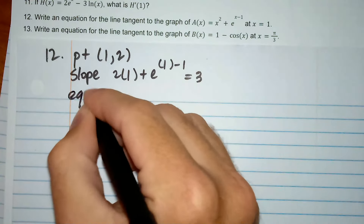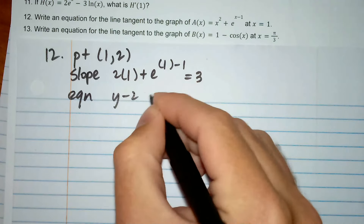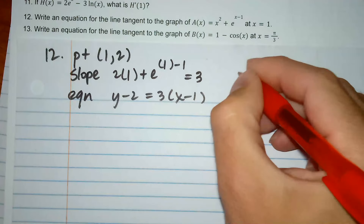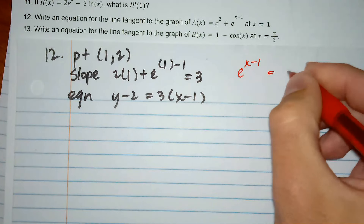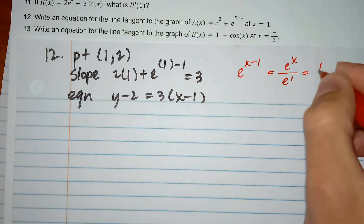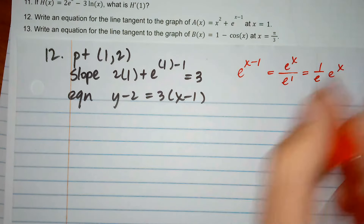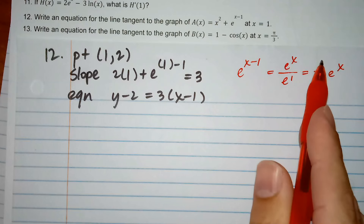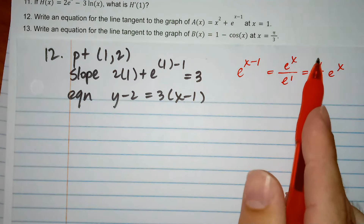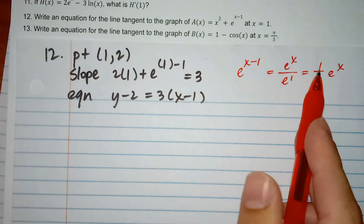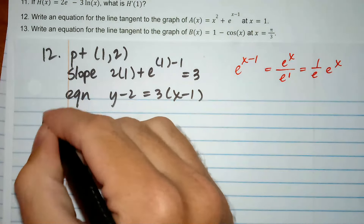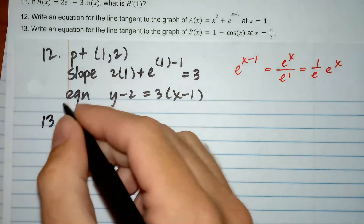For number 12, I need a point: x equals 1, y equals 1 squared plus e to the 0 — that's 1 plus 1, which is 2. For the slope, it's going to be 2x plus e to the x minus 1, which is its own derivative. Plugging in x equals 1: 2 plus 1 equals 3. The equation is y minus 2 equals 3 times x minus 1.